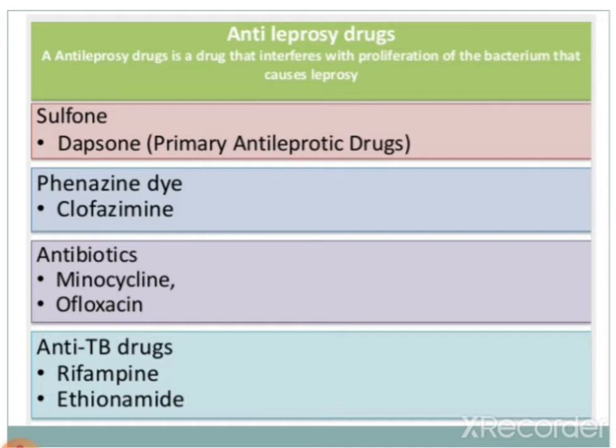Today we will discuss anti-leprosy drugs or anti-leprotic drugs — specifically, the drugs used for the treatment of leprosy or drugs that interfere with proliferation of the bacteria that causes leprosy. There are four categories of anti-leprosy drugs. The first and most important category is sulfones or sulfone derivatives, with Dapsone as the primary anti-leprotic drug.